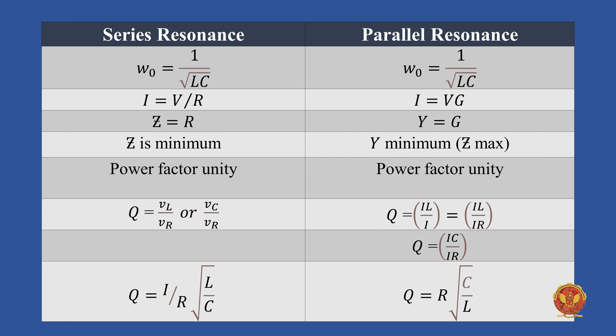Quality factor Q equals 1/R times the square root of L/C in the case of series resonance. In parallel resonance, 1/R is replaced by R, and C is replaced with L, so Q equals R times the square root of C/L.